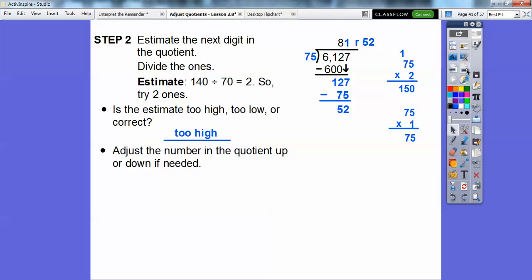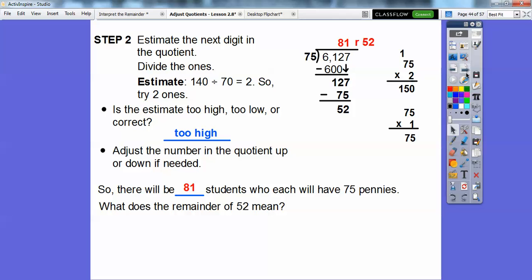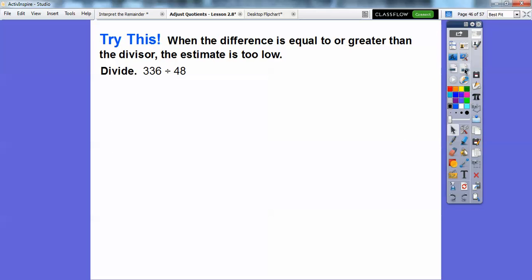Let's answer the question. The question's asking how many students will each have 75 pennies. 81 kids are going to get 75 pennies. This is the remainder. So 81 students will each have 75 pennies. What does that remainder of 52 mean? That just means there's 52 pennies left over. At least 81 kids get the 75 pennies.